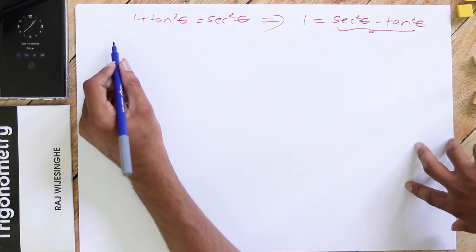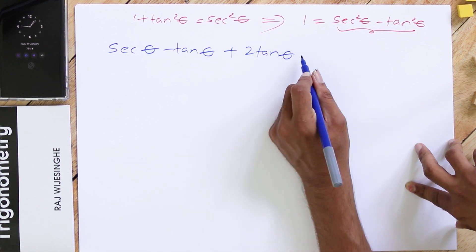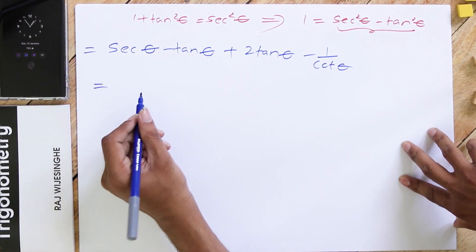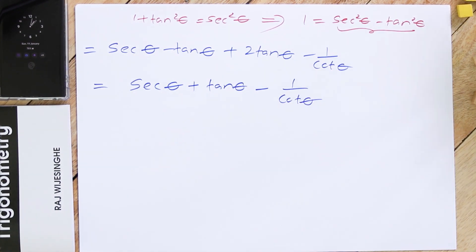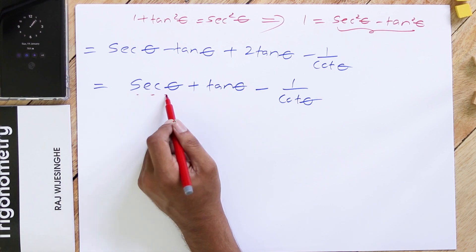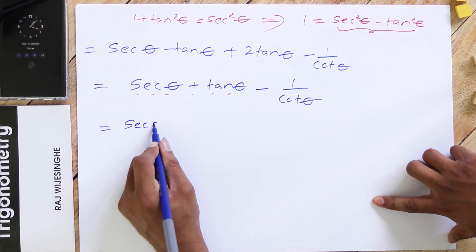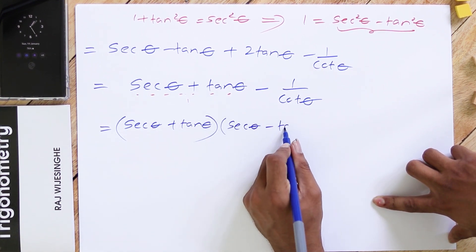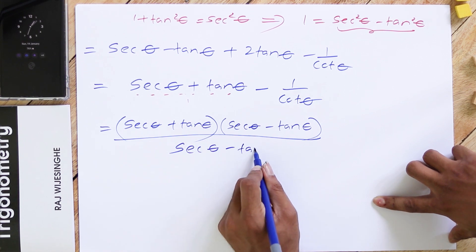The output becomes: sec θ − tan θ + 2 tan θ − 1/cos θ, which simplifies to sec θ + tan θ − 1/cos θ. Now, we multiply sec θ + tan θ up and down by its conjugate (sec θ − tan θ). So it is (sec θ + tan θ)(sec θ − tan θ) in the numerator over (sec θ − tan θ) in the denominator, minus 1/cos θ.